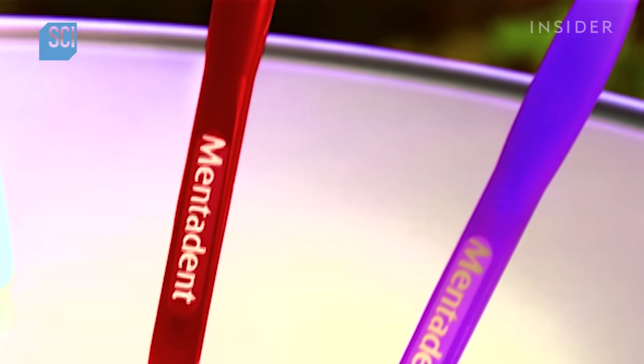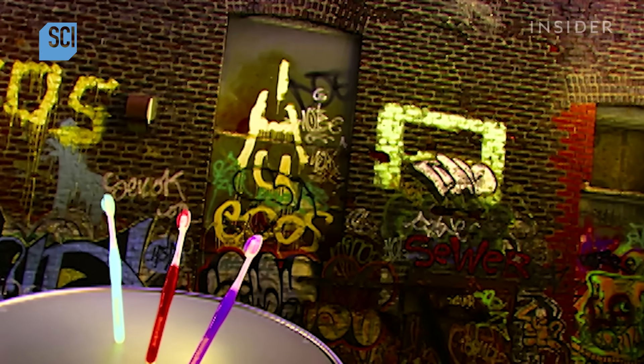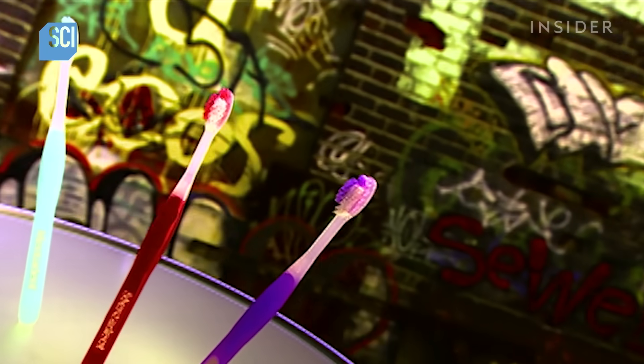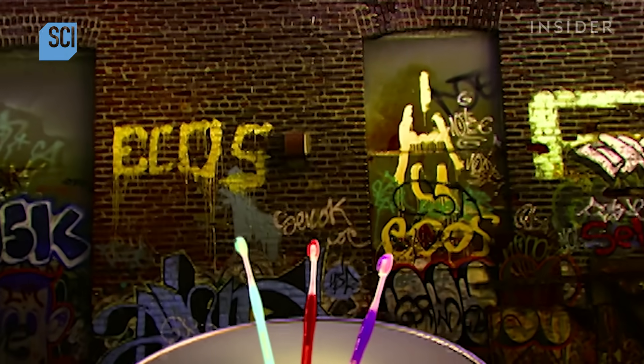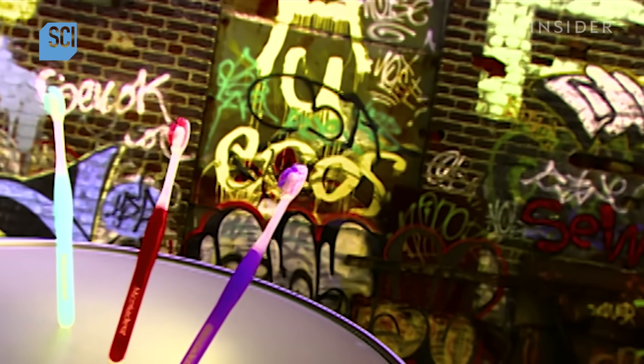The Chinese invented the first toothbrush around 1600, but it wasn't until about 1780 in England that it became a mass-produced item. Like those that followed, its bristles came from the necks and shoulders of pigs.